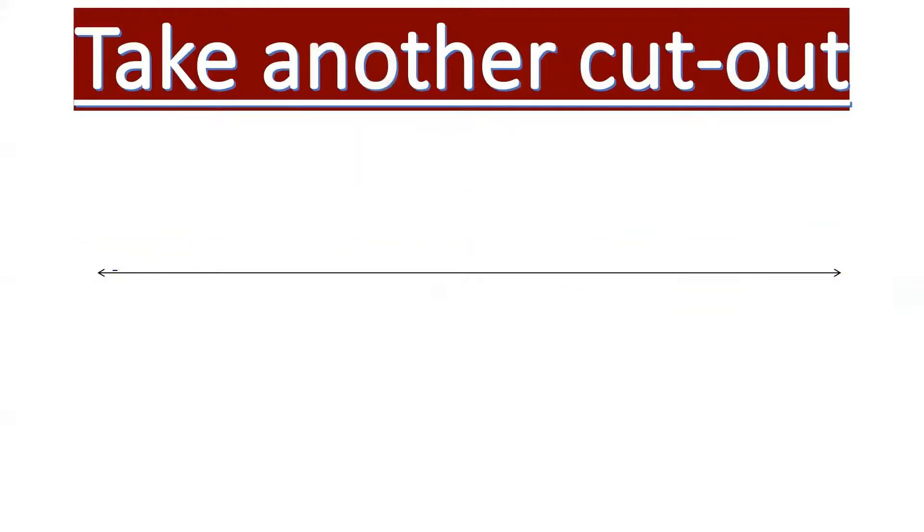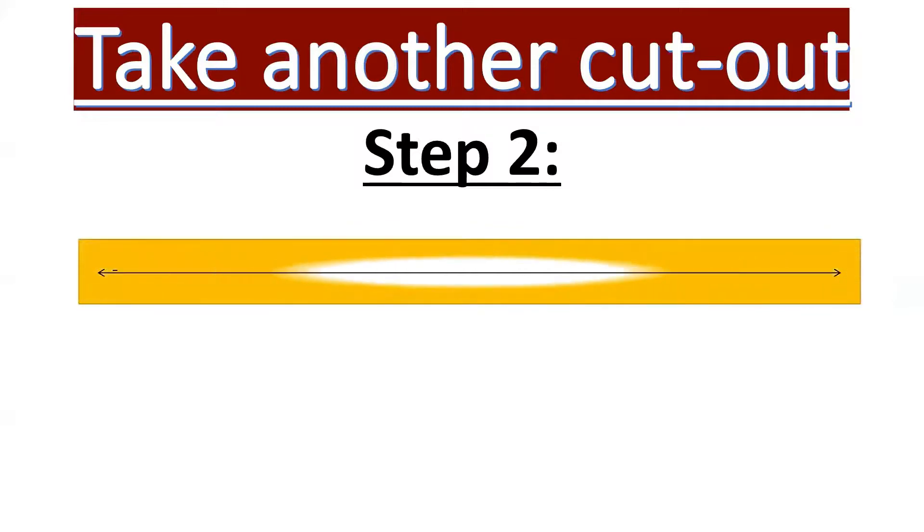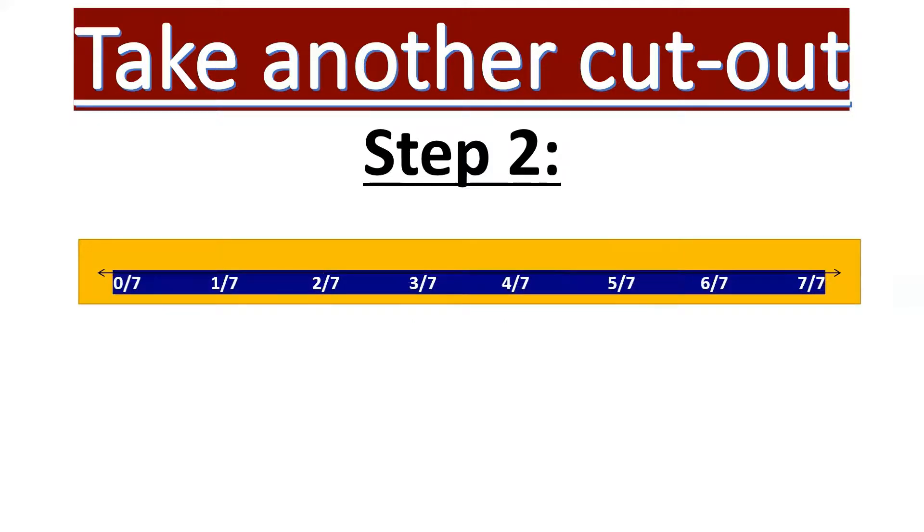Let's move to another step. We will take another cutout. Step two would be dividing into equal parts. So in this way we represent numbers like this: 0 by 7, 1 by 7, 2 by 7, 3 by 7, 4 by 7, 5 by 7, 6 by 7, 7 by 7.